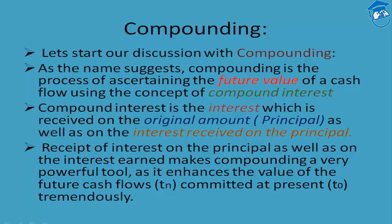In the second period, interest is calculated not only on the original principal in isolation, but also on the existing interest added to the principal — the new interest is computed on principal plus already earned interest. This is not the case in simple interest, where we do not earn interest on interest — it is simply PTR/100. This receipt of interest on both principal and interest makes compounding a very powerful tool, tremendously enhancing the value of future cash flows Tn committed at T0.